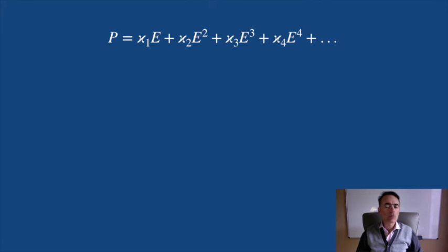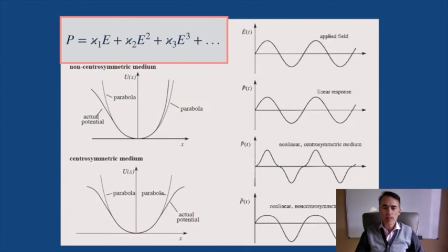When an electromagnetic wave is incident on a non-linear material, it makes the electrons oscillate. All these non-linear optics phenomena come from the fact that the potential that the electrons feel when they are forced to oscillate because of an external oscillating electric field is non-symmetric.